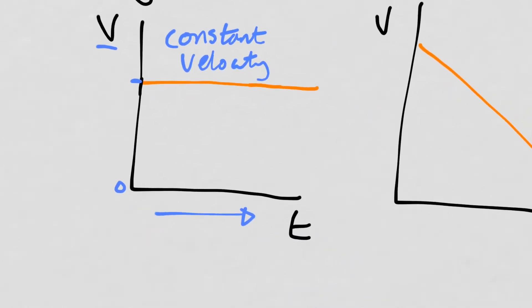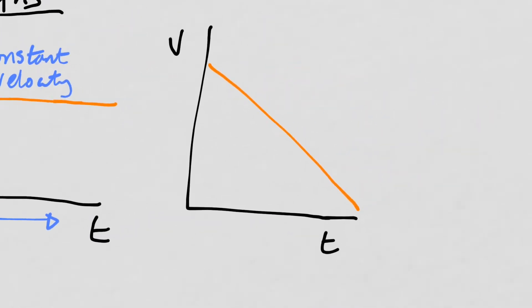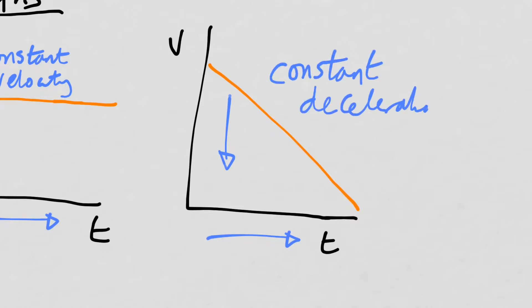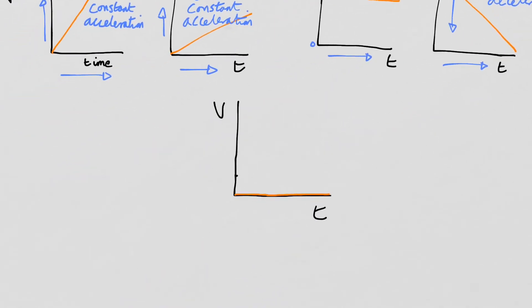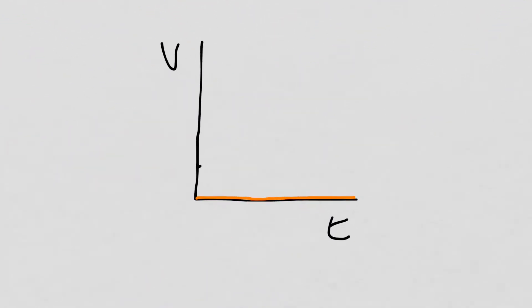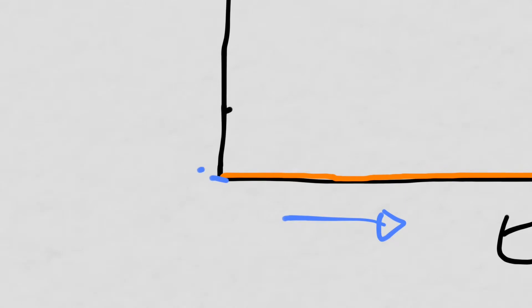In this graph, as time goes on velocity is going down, so the object must be decelerating. This is constant deceleration. And finally in this last graph, the velocity is not changing again — constant velocity — however notice that the velocity is zero. So in this case the object is stationary.